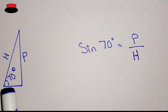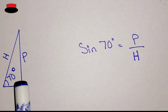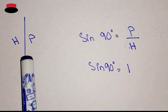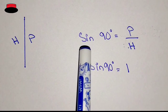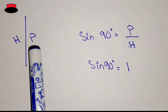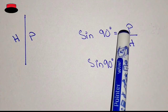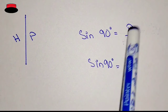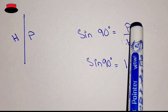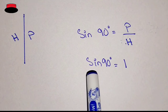If we keep on decreasing the size of the base, a time will come when the hypotenuse and the perpendicular become one line. Here the hypotenuse and perpendicular are the same. So when the angle reaches 90 degree, the length of the hypotenuse and the perpendicular will be the same. Therefore sin 90 degree equals perpendicular upon hypotenuse, and since they are equal they cancel — that's why sin 90 degree equals 1.